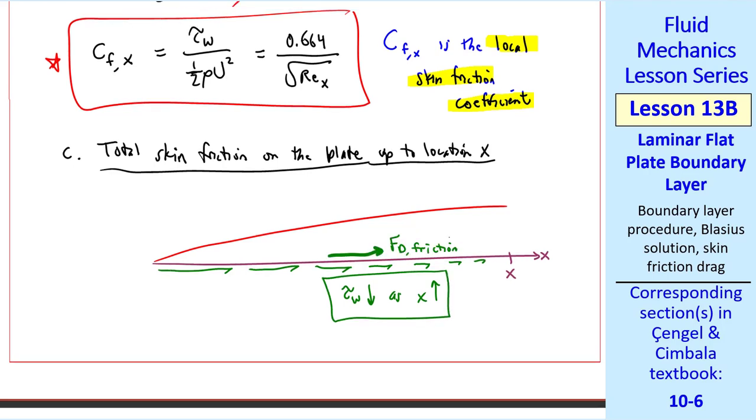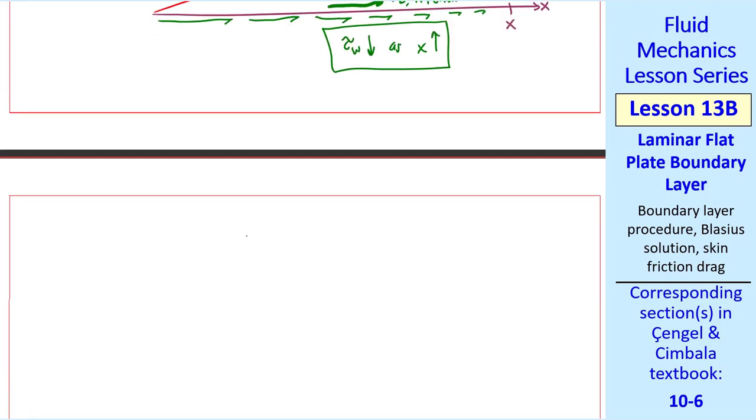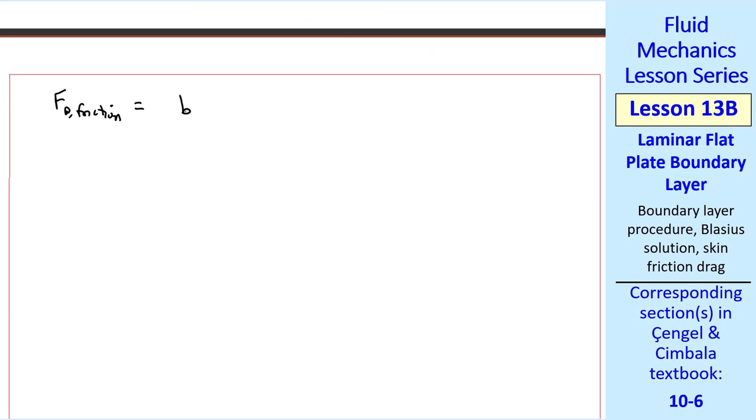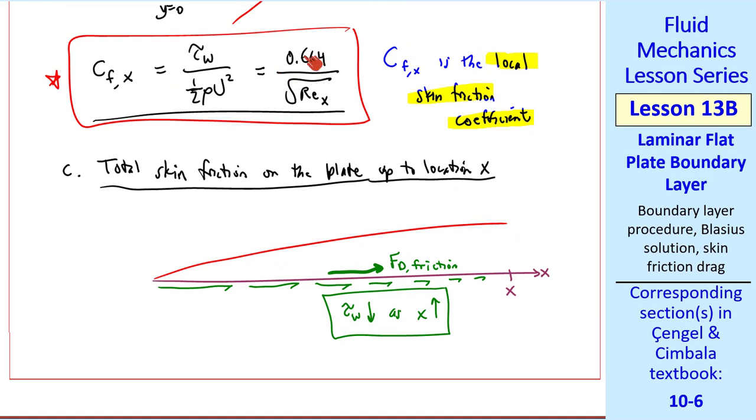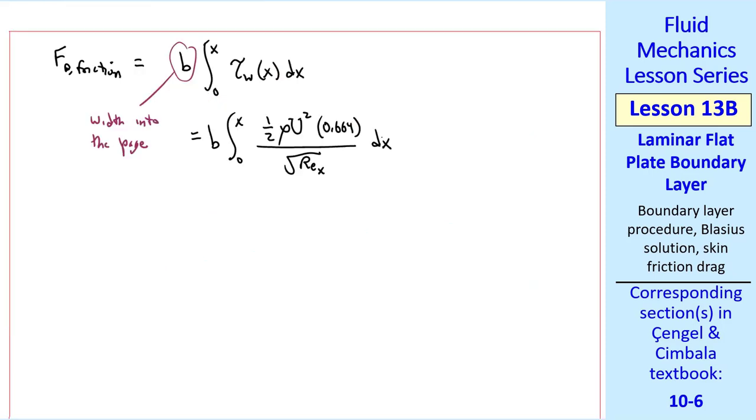We calculate the total friction force due to drag along the plate, or skin friction drag, by integrating along the plate. In other words, integrating tau w from this equation. So I write FD friction equal B, which is the width into the page, times the integral from 0 to x of tau w, which is a function of x, dx. And then we plug in this equation. Tau w is this quantity times 1 half rho u squared. So we have this integral. We rearrange this as 1 half rho u squared a times 1 over x integral 0 to x of 0.664 over the square root of REx dx. Where a is b times x, which is the surface area of the plate. And we're talking here about one side of the plate.